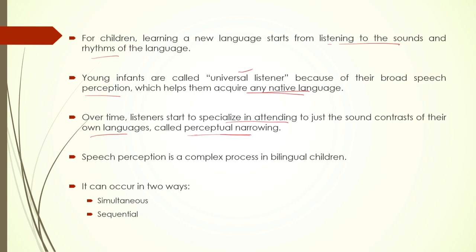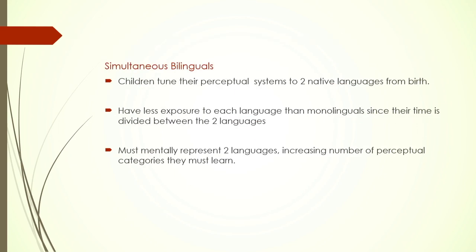Starting with a very broad spectrum, any kind of sound and their contrasts are open to the child. However, over a period of time, the understanding of sound perceptual contrast gets focused only on the language they are exposed to. Speech perception as a result of this is a very complex process — more complex than in adults — and this can occur in two ways: simultaneous and sequential. We have seen simultaneous bilinguals and sequential bilinguals; this is related to that idea.